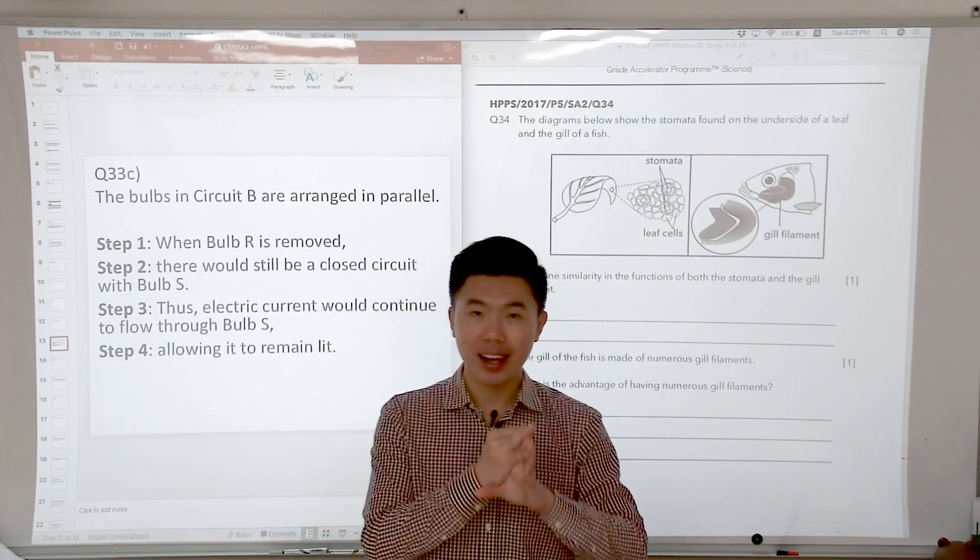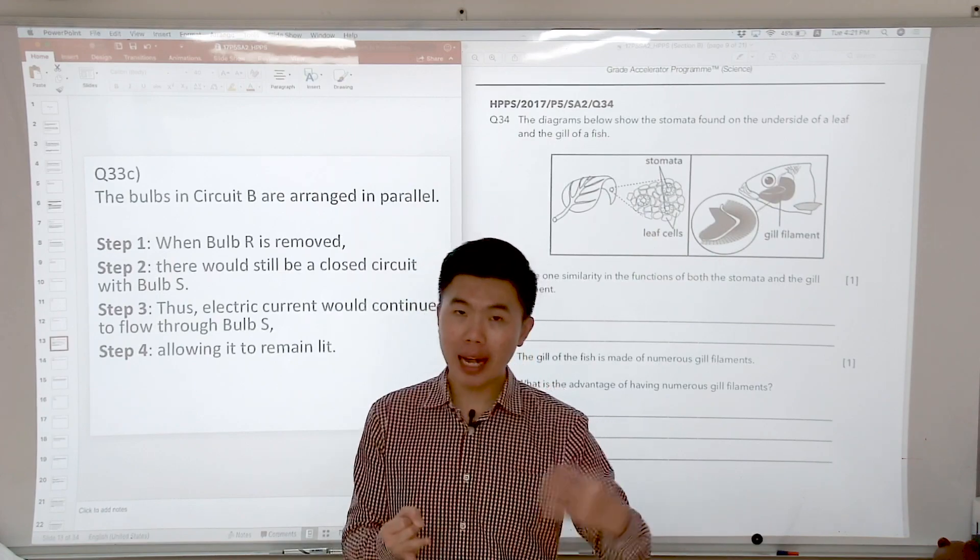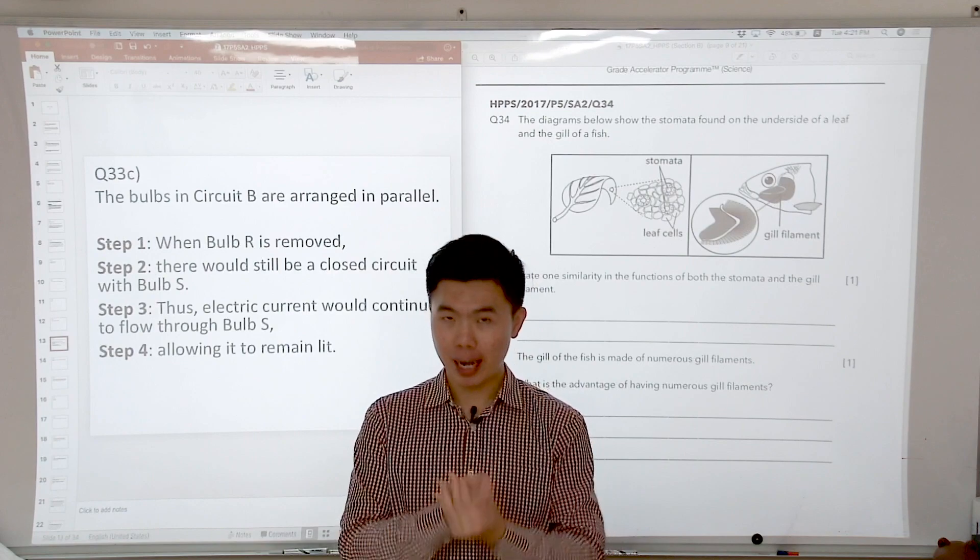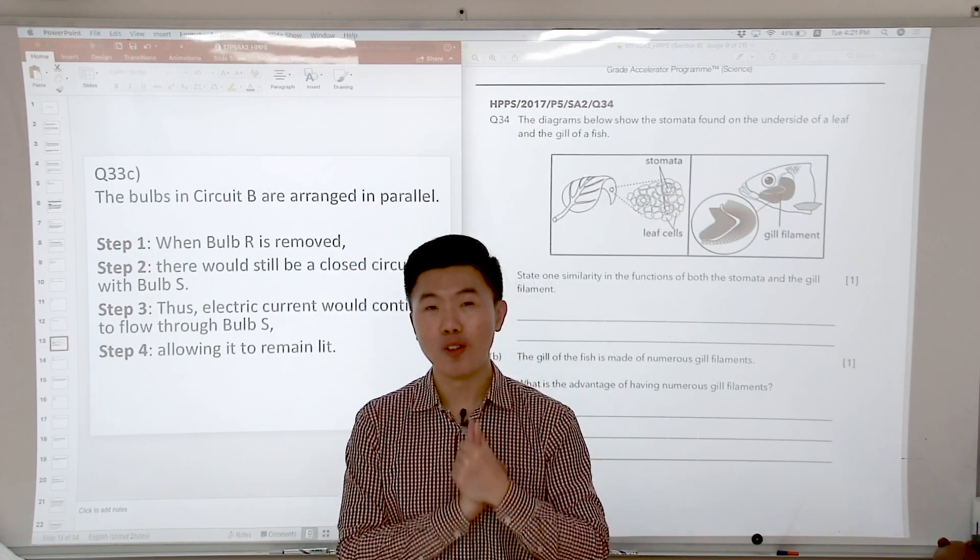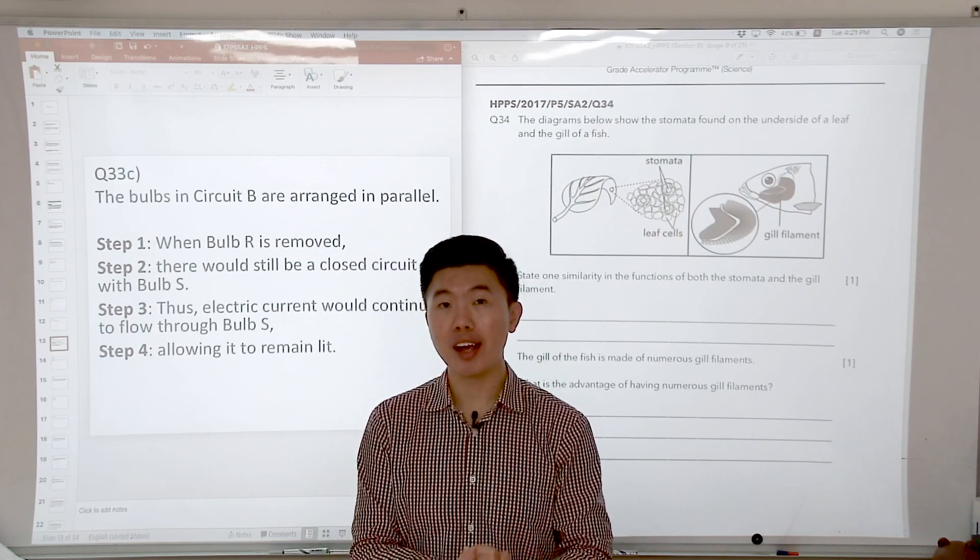So the other gas we're going to talk about is carbon dioxide. Does the plant take in carbon dioxide? Carbon dioxide is taken in by the plant for what process? For photosynthesis to make food.